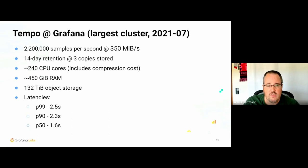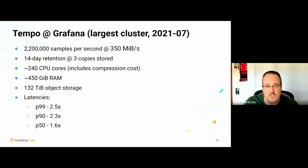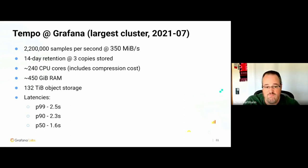Our largest Tempo cluster is ingesting 2.2 million samples per second and 350 megabytes per second. With 14 days retention, three copies stored, the cost is 204 CPU cores, 450 GB of RAM, and 132 terabytes of object storage — and we still have a P99 query latency of under 2.5 seconds.